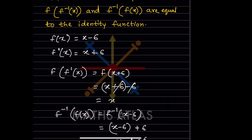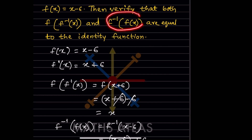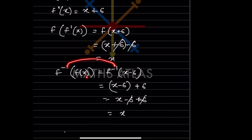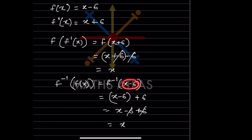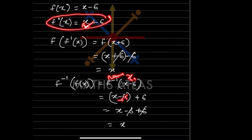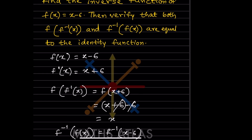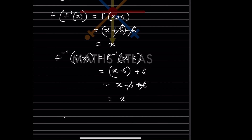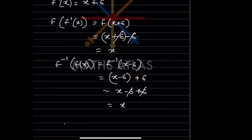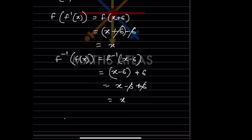So f(f⁻¹(x)) = (x + 6) - 6, and the +6 and -6 cancel, giving x. Now for f⁻¹(f(x)): f(x) = x - 6, so we substitute x - 6 into f⁻¹(x) = x + 6. We get (x - 6) + 6, and the -6 and +6 cancel, again giving x. Both compositions equal x, verifying they are inverse functions of each other.